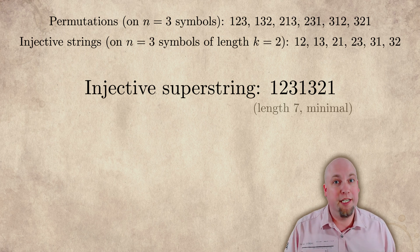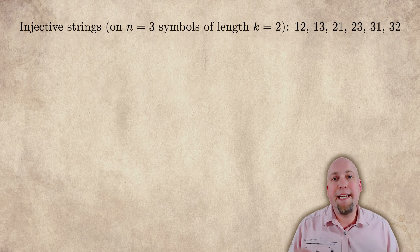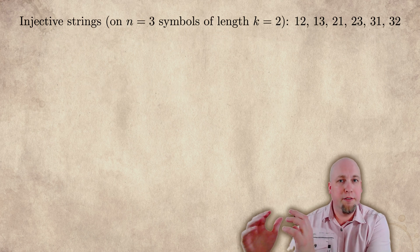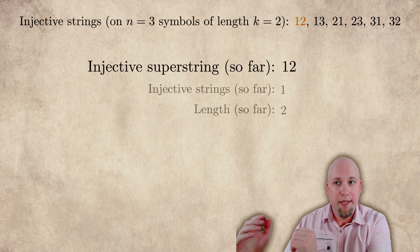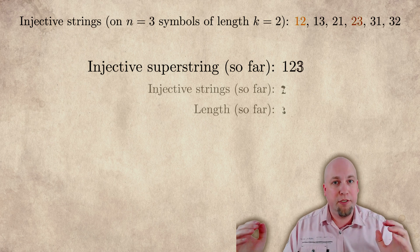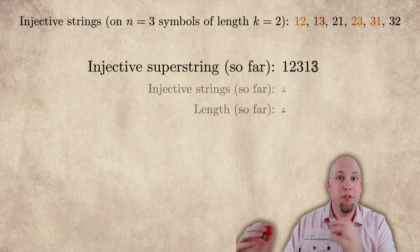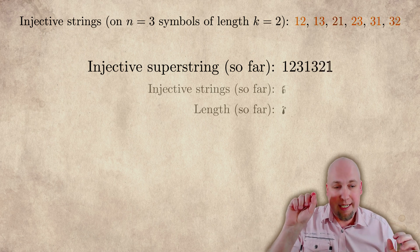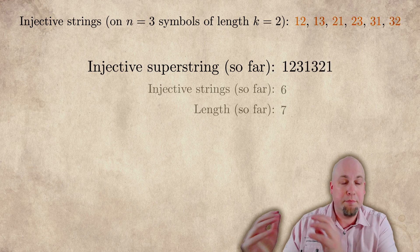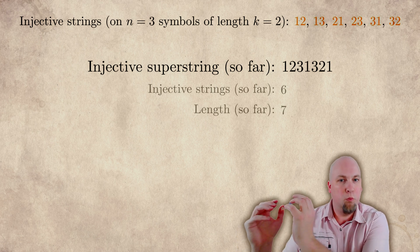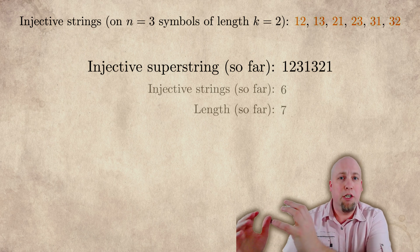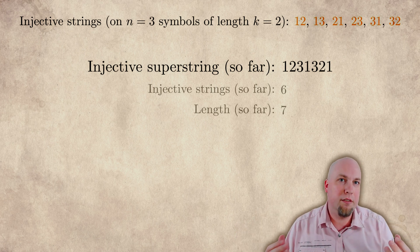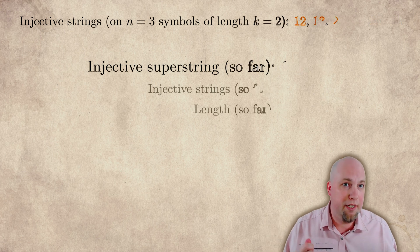This is a minimal injective superstring. To see this, notice that in any injective superstring with these parameters, the first two characters can contain no more than one of these injective substrings. And then every single additional character after that can contribute no more than one additional injective substring. So if I want to contain all six of them, the first two characters contribute one, and then each additional character contributes at most one more — so I can't contain all six until I have at least seven characters total.